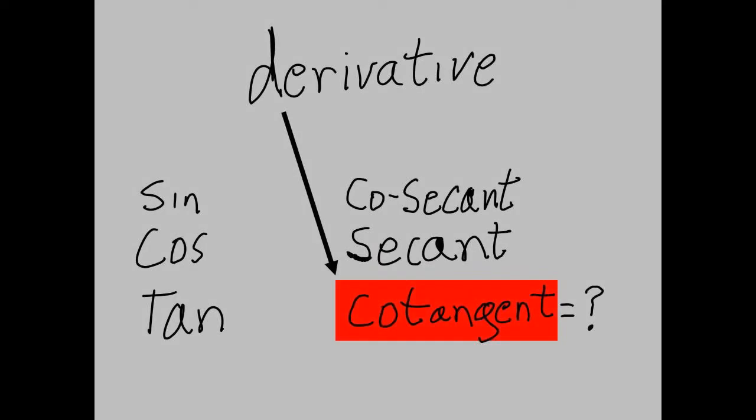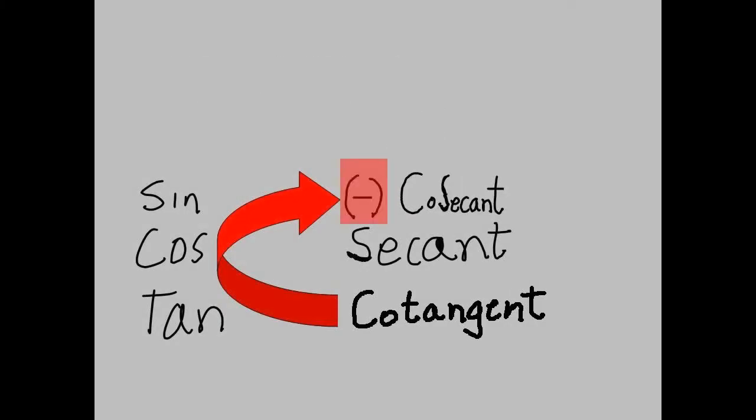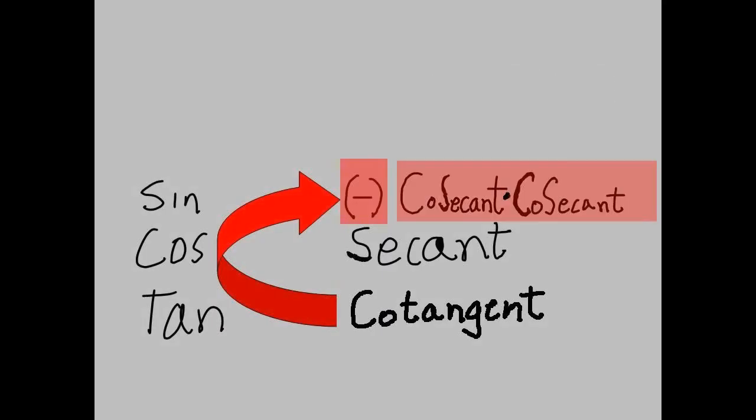The derivative of cotangent equals what? The arrow on the left is negative: negative cosecant times cosecant, or negative cosecant squared. So the derivative of cotangent is negative cosecant squared.